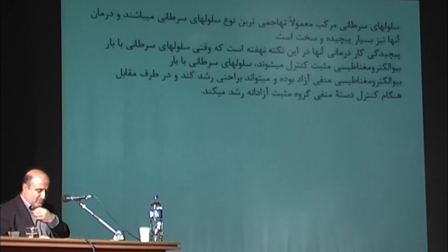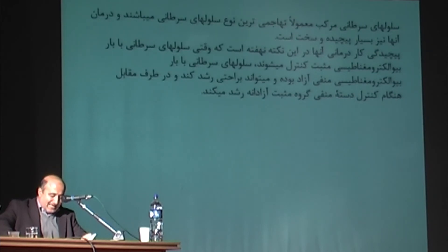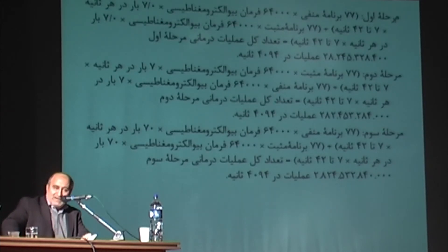Phase 1: 77 negative programs multiplied by 64,000 bioelectromagnetic commands multiplied by 0.7 times per second multiplied by 7 to 42 seconds, plus 77 positive programs multiplied by 64,000 bioelectromagnetic commands multiplied by 0.7 times per second multiplied by 7 to 42 seconds, equals a total number of first phase treatment operations of 28,245,324,800 in 4,094 seconds.